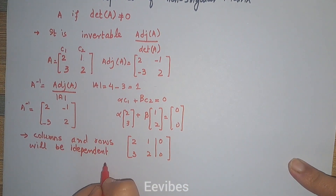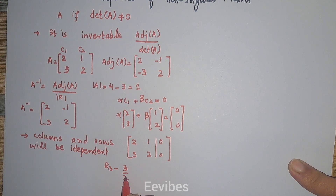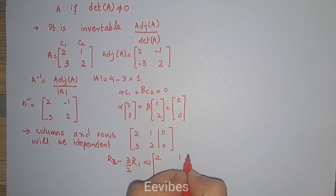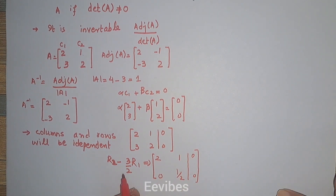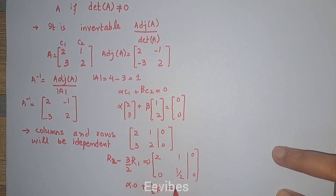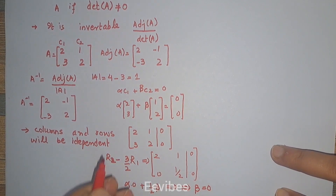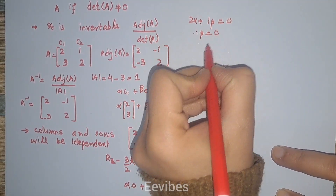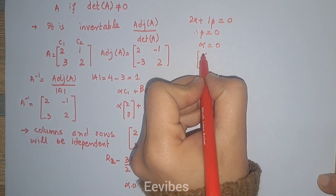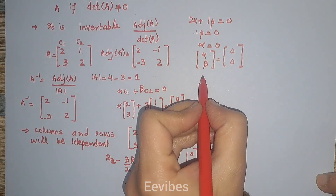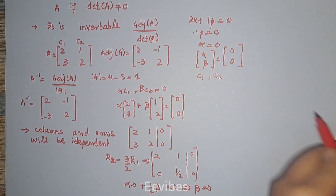Let's apply Gauss elimination quickly. The row operation performed is R2 minus (3/2) times R1. This gives a 1/2 entry in the second row, with the rest becoming 0. Performing back substitution: (1/2)·beta = 0 implies beta = 0, and then 2·alpha + 1·beta = 0 with beta = 0 implies alpha = 0. There are no non-zero scalars whose linear combination equals zero, so column 1 and column 2 are linearly independent.